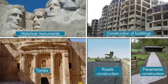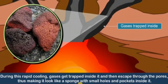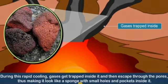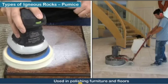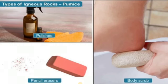You may have noticed that your kitchen counter at home is also made of granite. Pumice is a unique, light and porous rock formed when molten lava cools very quickly. When the rock cools quickly, gases get trapped inside it, which is why it looks like a sponge and has small holes in it. Pumice is porous and hence it can float on water. It is light and used in polishing furniture and floors. It is also used in polishes, pencil erasers and body scrubs.